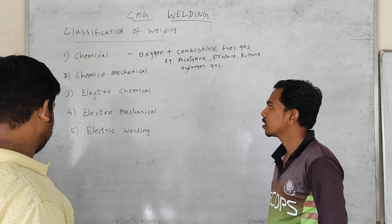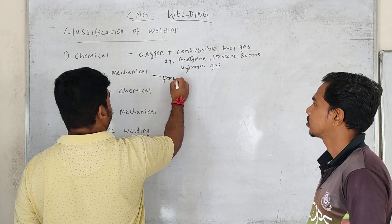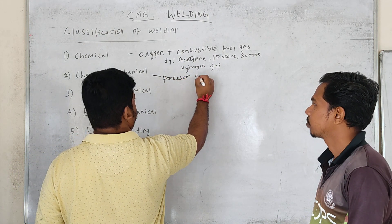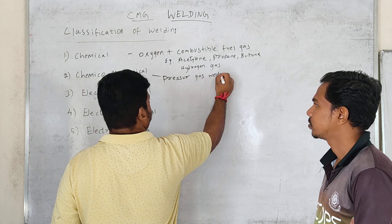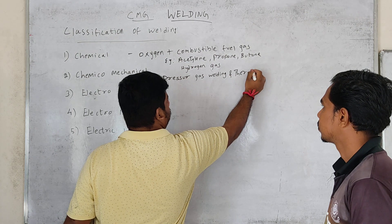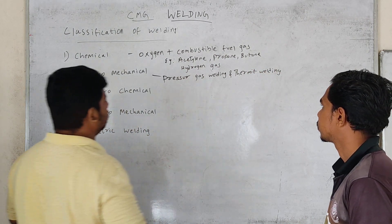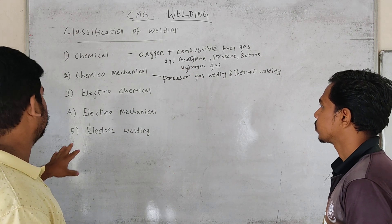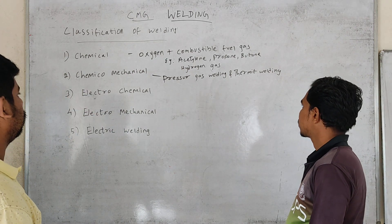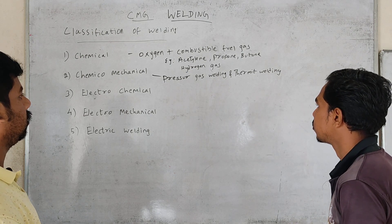Next, chemical and mechanical welding. What is chemical and mechanical welding? Pressure gas welding and thermite welding use both chemical and mechanical energy. Chemical and mechanical welding is used in pressure gas welding and thermite welding.